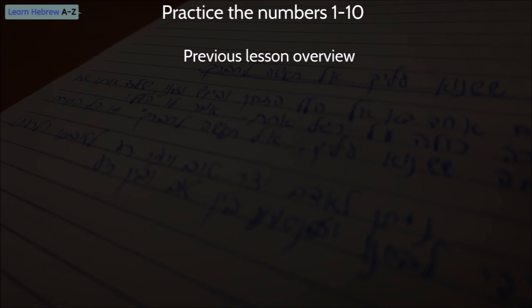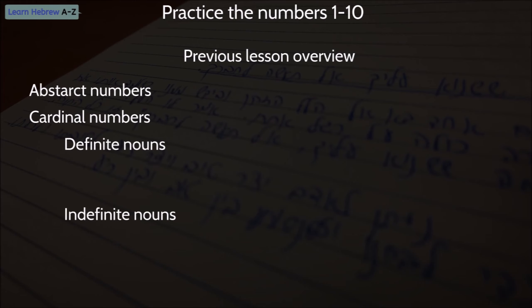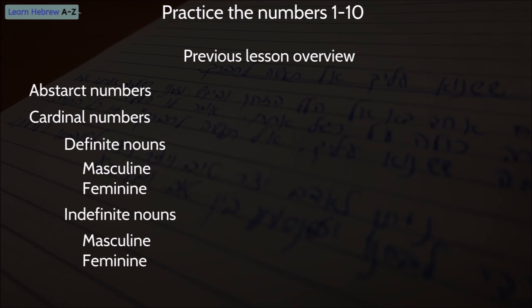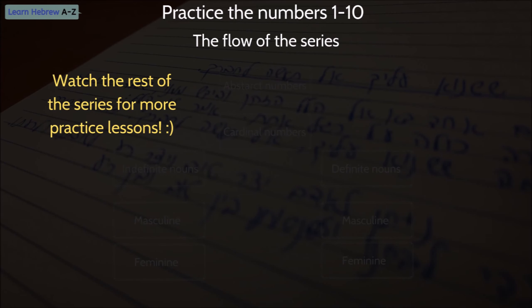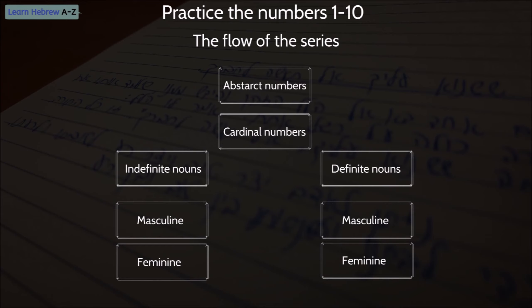We started with abstract numbers, then we continued to cardinal numbers. In cardinal numbers, we discussed counting indefinite and definite nouns, and for each, we discussed the feminine form and the masculine form. Here is a diagram that will help you understand the development of the lesson. Each main topic in this series will be covered by separate lessons, so make sure to follow all lessons if you want to master the Hebrew numbers 1 to 10.